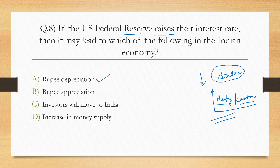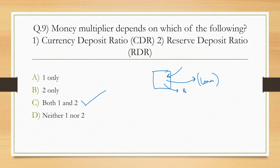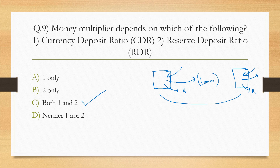Money multiplier depends on which of the following: currency deposit ratio, reserve deposit ratio? Options: 1 only, 2 only, both 1 and 2, neither 1 nor 2. The correct answer is C — both 1 and 2. The money multiplier process works as follows: deposits go into the bank, the bank reserves a portion and loans out the rest, which is then re-deposited. This cycle is the money multiplier process.